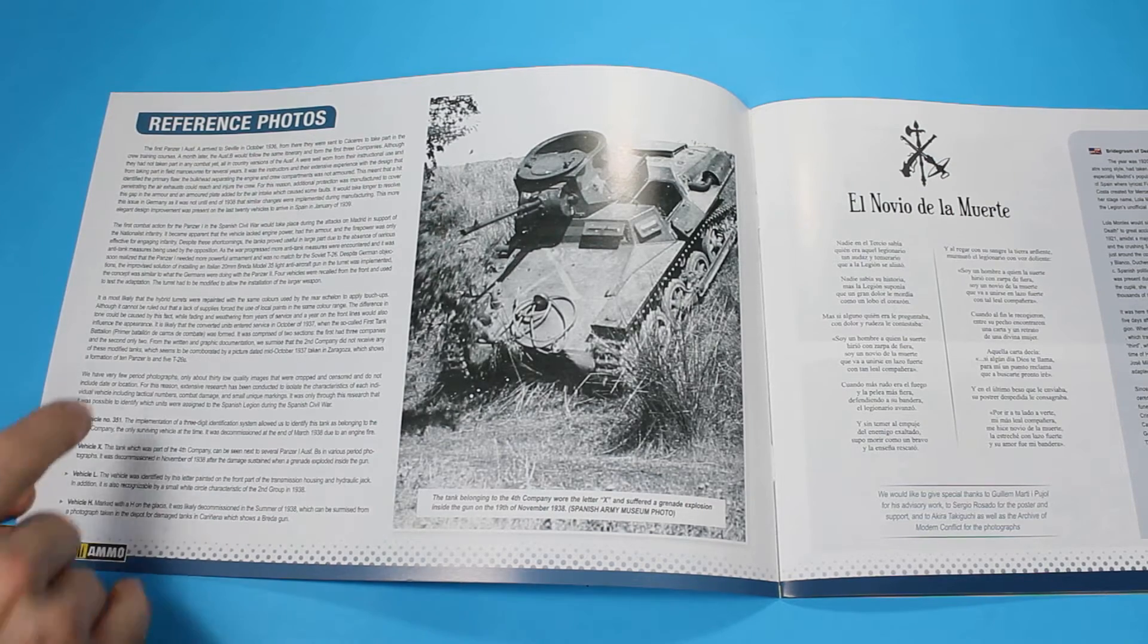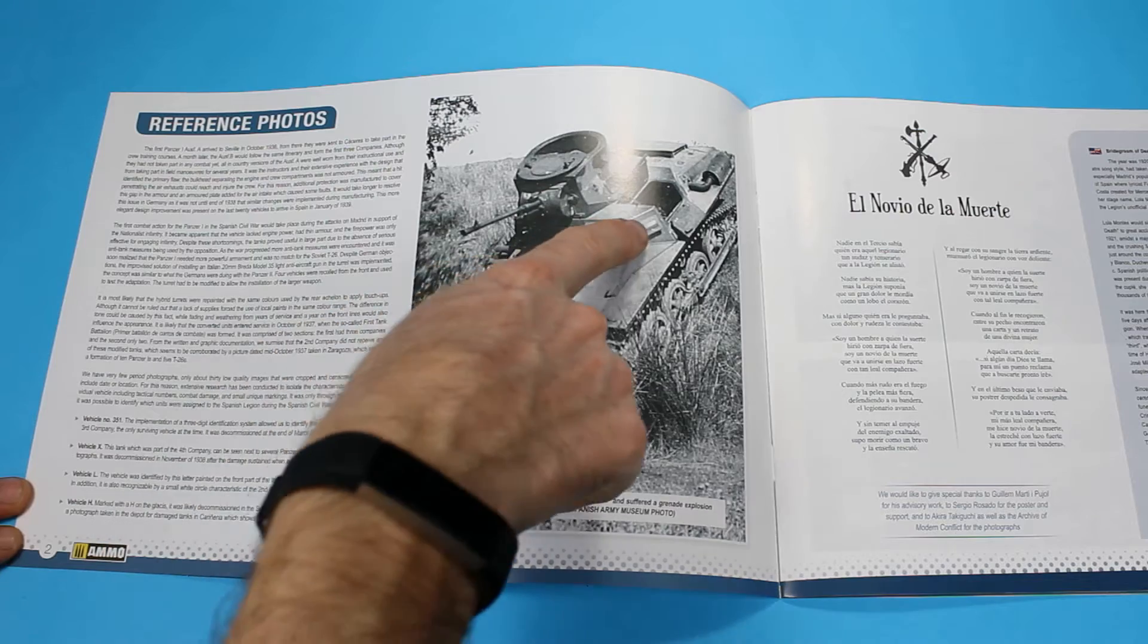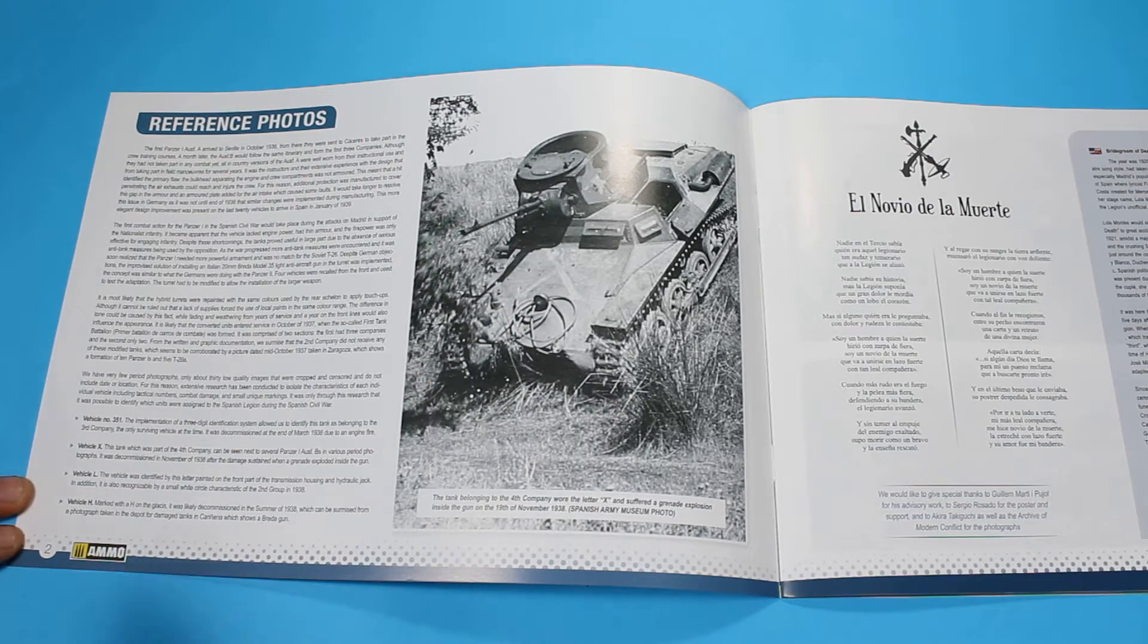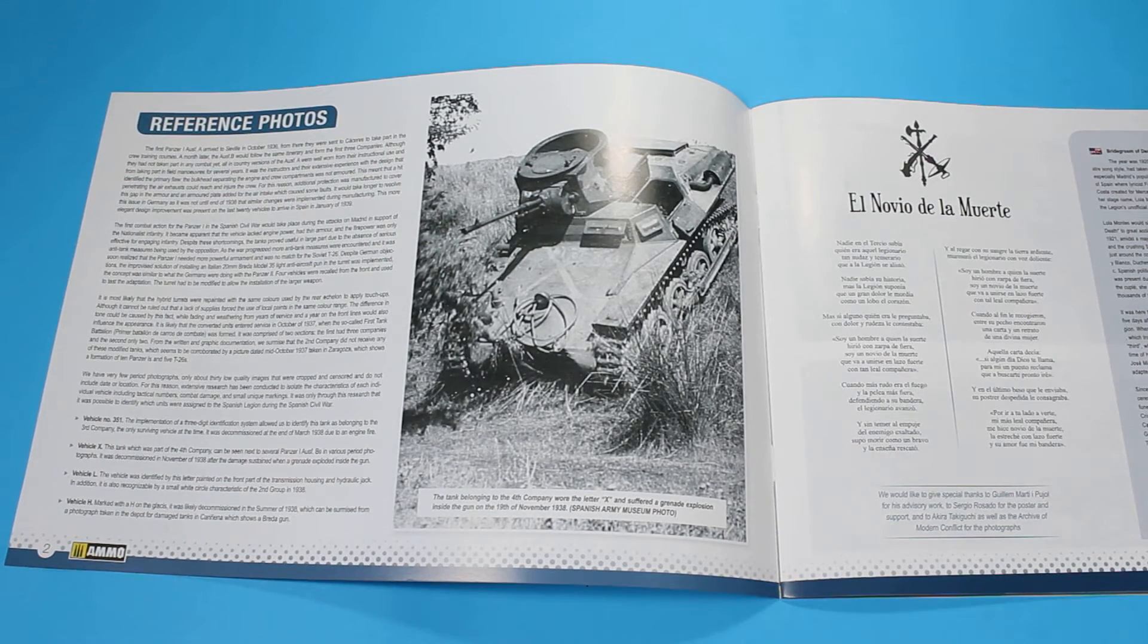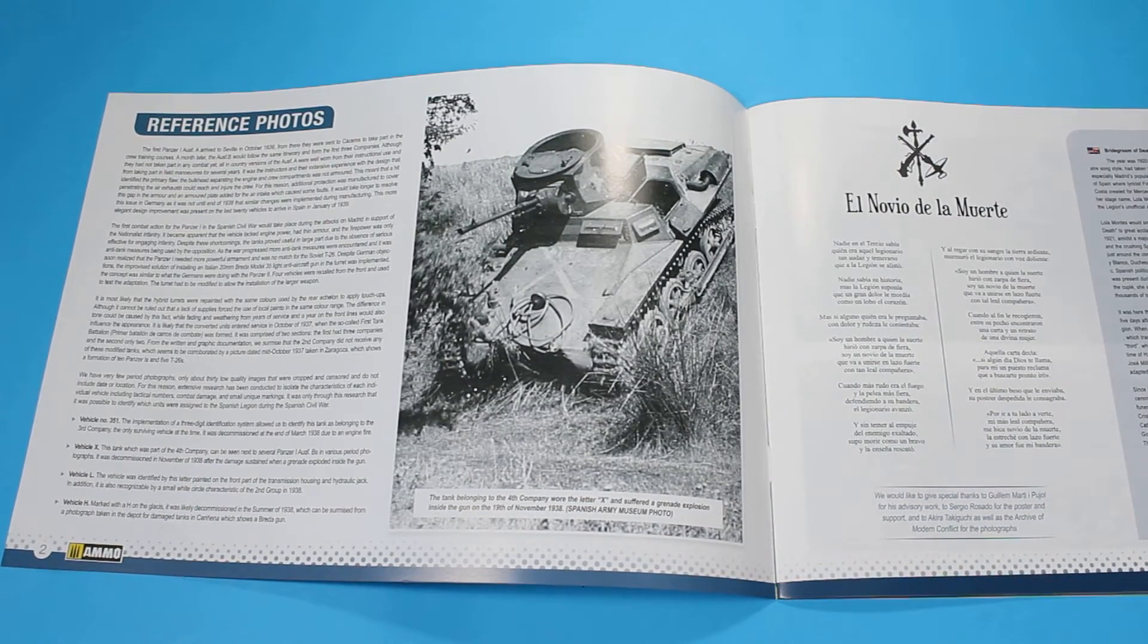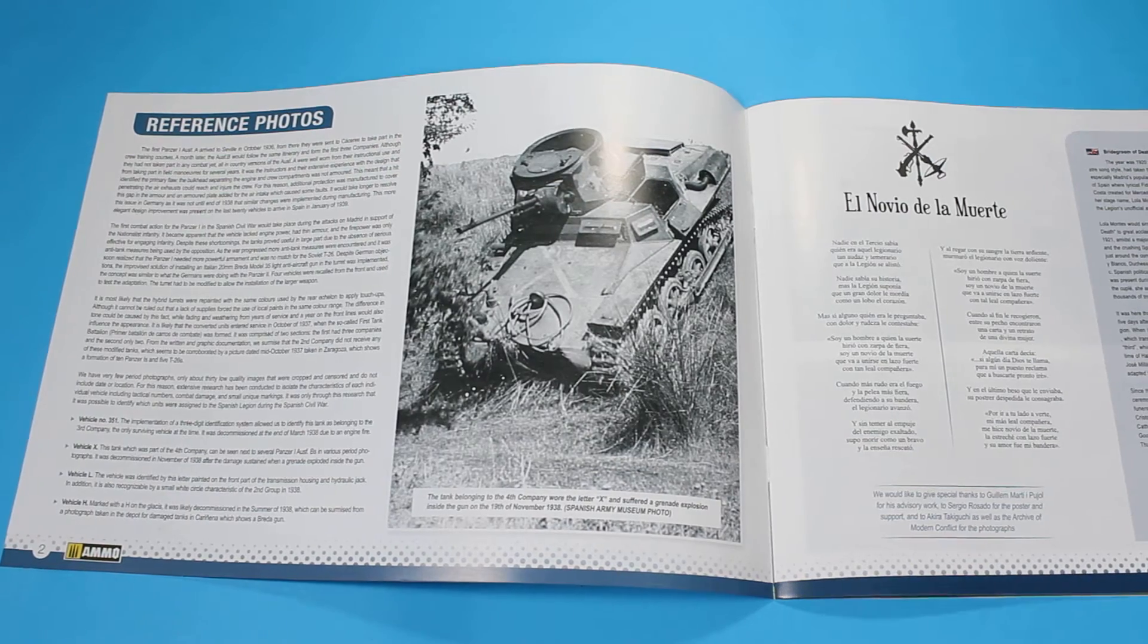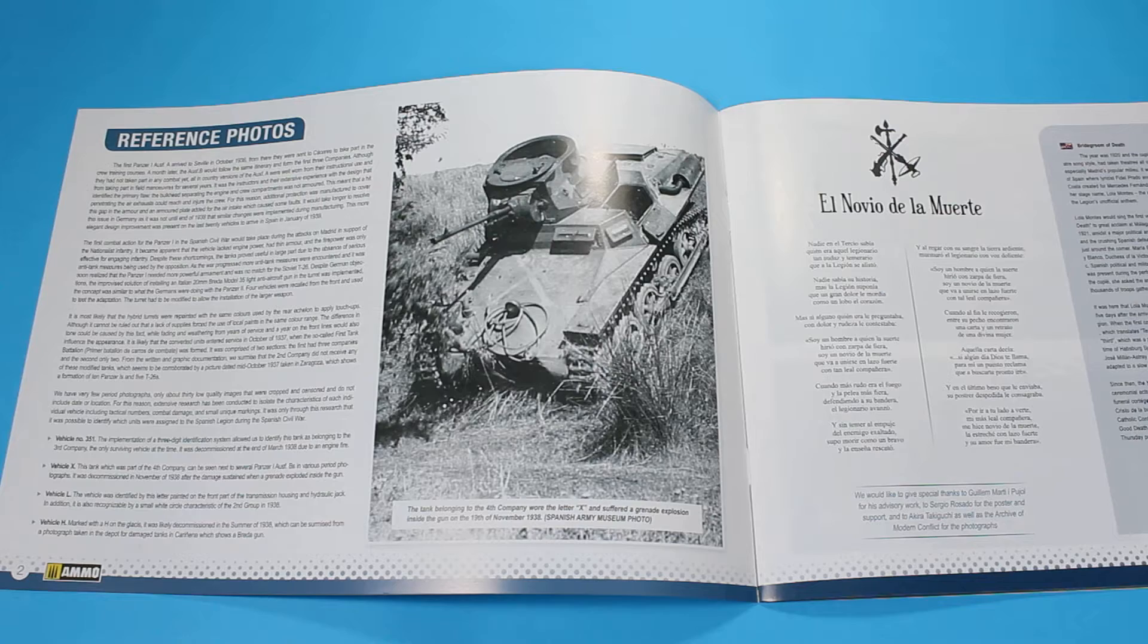There was four vehicles and they're listed out as this. You've got vehicle number 351, vehicle X, which is this one with the X on top, vehicle L, which is identified by the letter L being painted on it, and vehicle H, which had an H on the glaciers plate. So MIG, with the help of a few people that are mentioned here, have gone to great depths to get this correct, and that's what you want from a kit. Especially something as special as this.